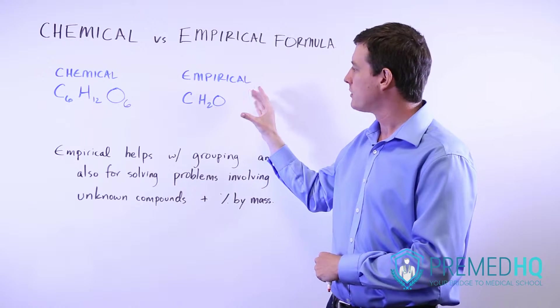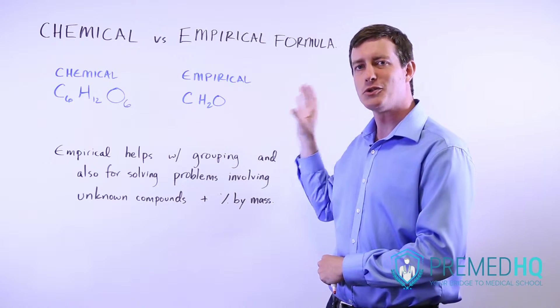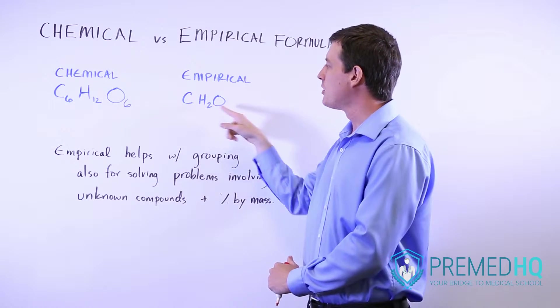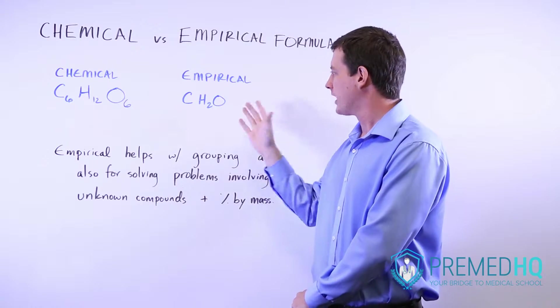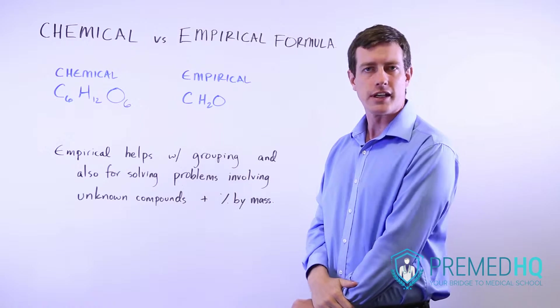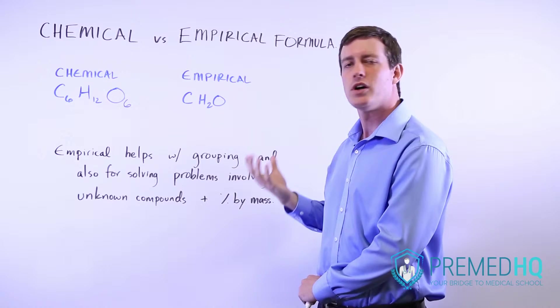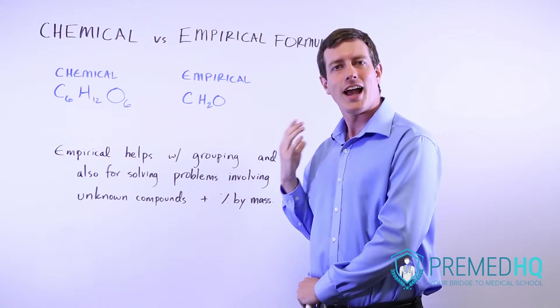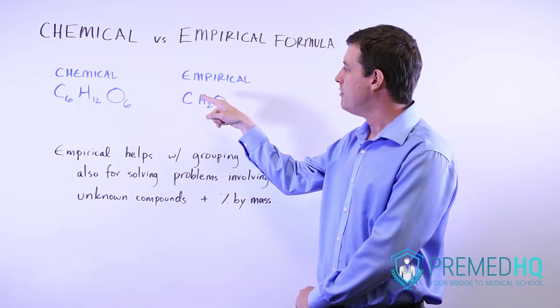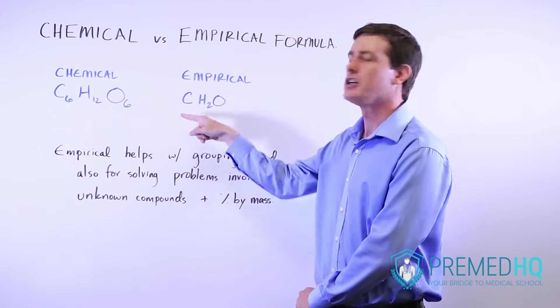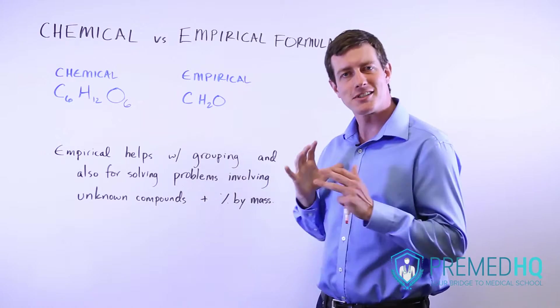This is a very common empirical formula that you'll see, and they're often helpful with grouping. This is a carbohydrate - carbon plus water. Glucose is one of the more famous carbohydrates, and its empirical formula is shared by many sugars and carbohydrates. They all have one carbon for every two hydrogens and one oxygen for every carbon. This is useful for grouping different compounds into categories.